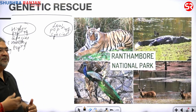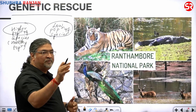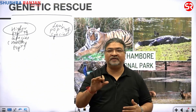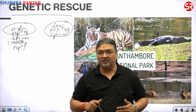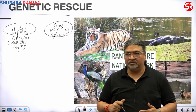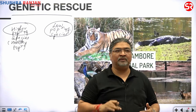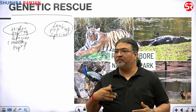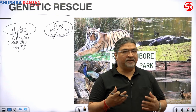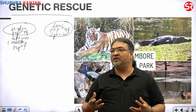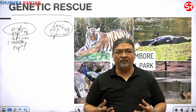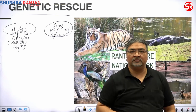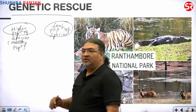What will happen with passage of time? The population of that animal — let us say tiger, or elephant, or rhinoceros — will decrease. So what generally the government does is bring animals for breeding purposes from one habitat to another.